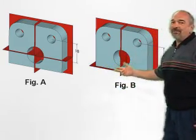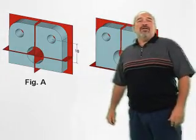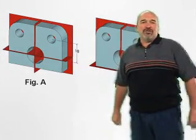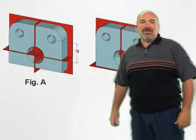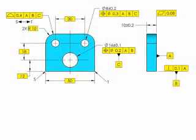If you said figure B, you are correct. The dimensioning may have thrown you off. You cannot go by the placement of dimensions like we used to in the old plus minus days. You have to follow the datum precedents stated in the feature control frame.